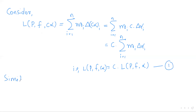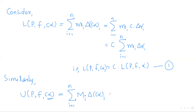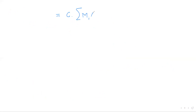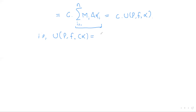Similarly for the upper Riemann-Stieltjes sum: U(P, f, cα) = Σ Mᵢ · Δ(cα)ᵢ = Σ Mᵢ · c · Δαᵢ = c · Σ Mᵢ · Δαᵢ = c · U(P, f, α). So U(P, f, cα) = c · U(P, f, α). Call this Equation 2.